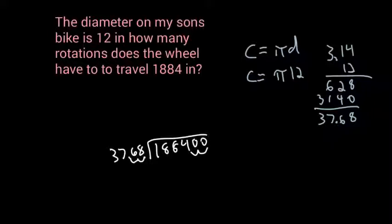So 5 times 8 is 40. 5 times 6 is 30 plus 4 is 34. 5 times 7 is 35 plus 3 is 38. 5 times 3 is 15 plus 3 is 18. So I subtract this and I get 0. Bring down that last 0. 3768 will go into 0, 0 times.